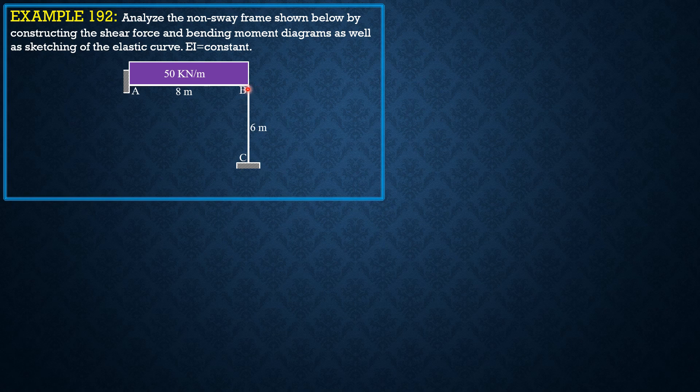Because of restraint, this frame cannot move or undergo side sway laterally. Therefore, this is an unsway frame, and the slope deflection equation is a powerful tool in dealing with this.